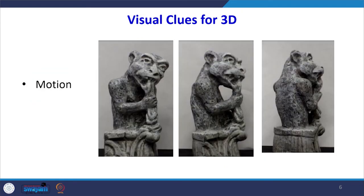Sometimes we use motion or movement to indicate 3D. In 3D motion, you can see a statue doing different activities in all three dimensions. This gives a 3D impact of that particular object.